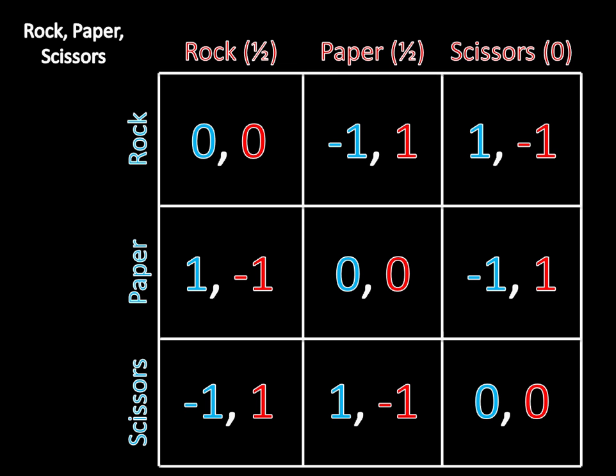In contrast, consider this hypothetical strategy for Rock, Paper, Scissors: player two plays rock with probability one-half, paper with probability one-half, and scissors with probability zero. In other words, she's never playing scissors — she plays rock some of the time and paper some of the time, but never scissors. As a result, scissors is not in the support of this mixed strategy, but rock and paper are.